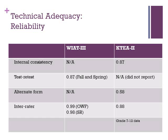Test-retest reliability was not reported for the KT-2. Since the WIAT-3 only has one form, it did not report alternate form reliability. Comparatively, the KT-2 does have two forms, and the alternate form reliability for the oral expression subtest was 0.58, the lowest reported for the KT-2. This indicates possible inconsistency between the oral expression subtest on each form.